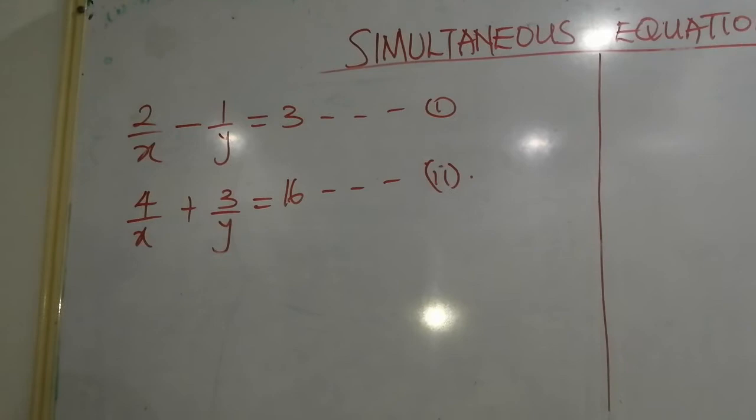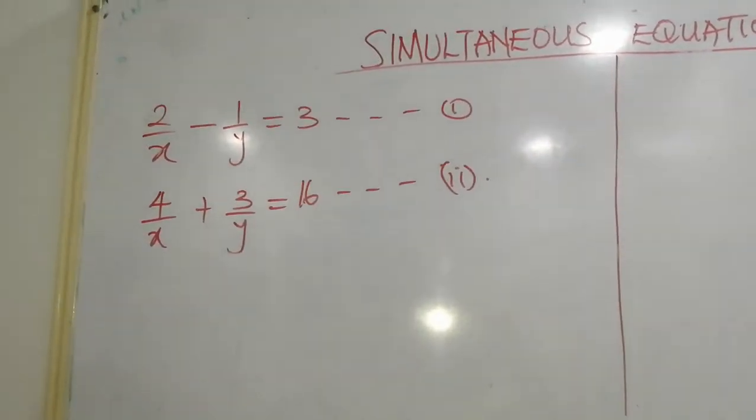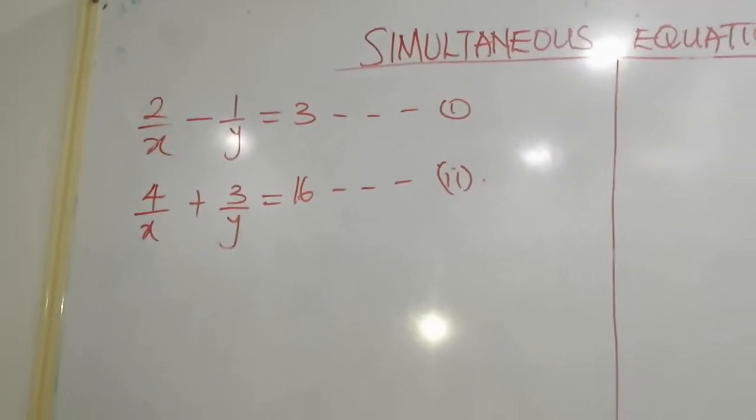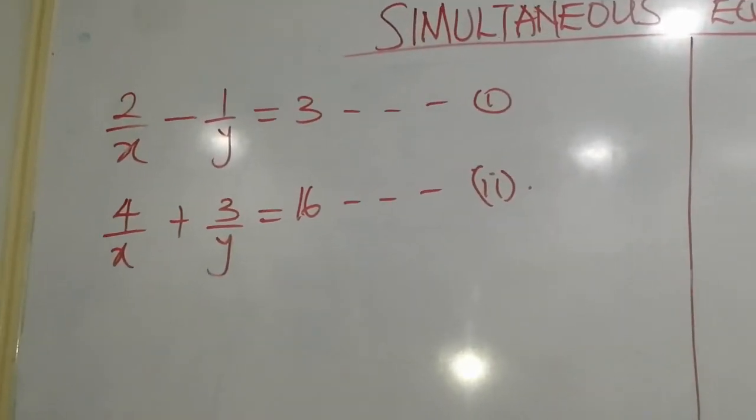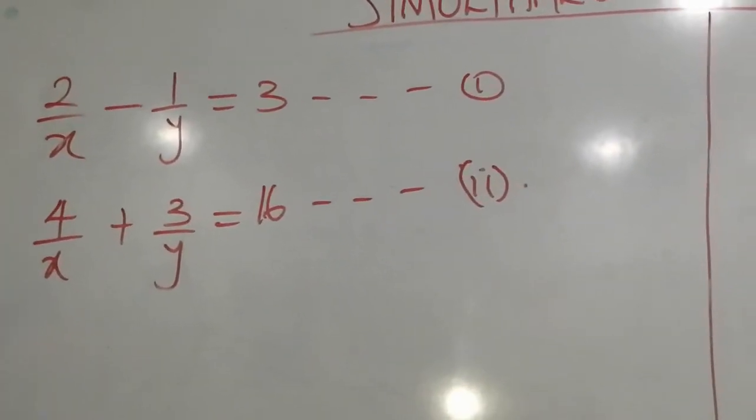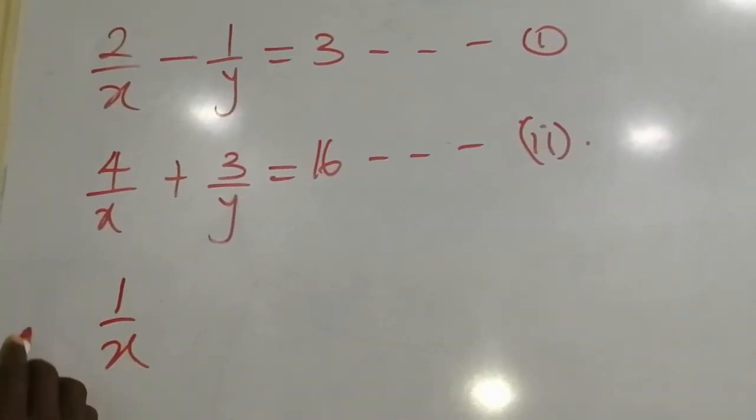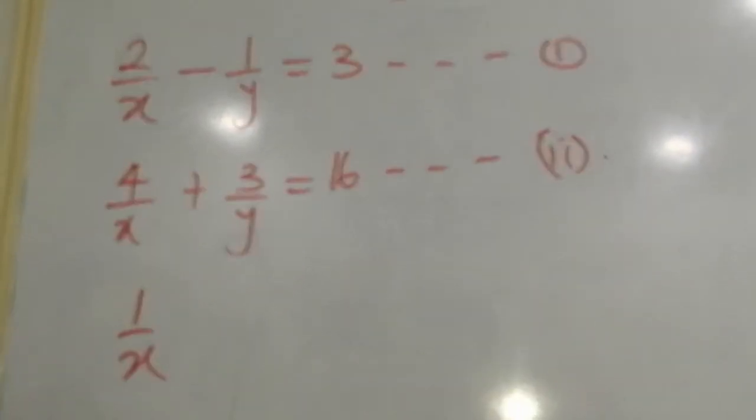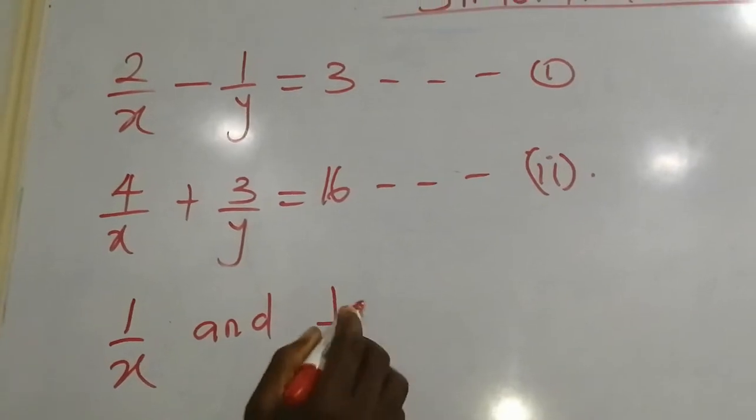Now let's look at this type of simultaneous equation. It looks strange but very simple. What you need to do is replace the variable x and y with 1 over x. You are replacing x with 1 all over x and y with 1 all over y.